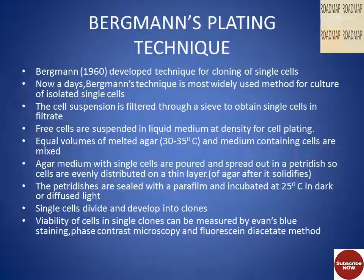Bergman in 1960 developed a technique for cloning of single cells, and nowadays Bergman's plating technique is a widely used method for culture of isolated single cells. The cell suspension is filtered through a sieve to obtain single cells in the filtrate. The free cells are suspended in a liquid medium at a density twice the required density for cell plating. Equal volumes of melted agar at 30 to 35 degrees centigrade and medium containing cells are mixed, then the agar medium with single cells is poured and spread in a petri dish so that cells are evenly distributed on a thin layer of agar after it solidifies. The petri dishes are sealed with parafilm and incubated at 25 degrees centigrade in dark or diffuse sunlight, and the single cells divide and develop into clones.